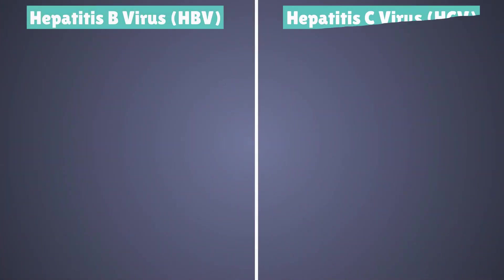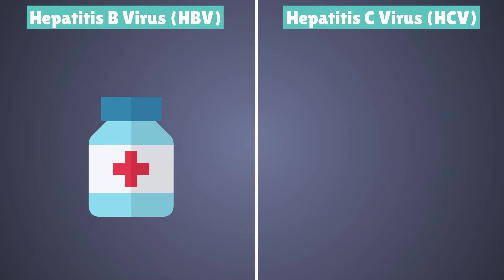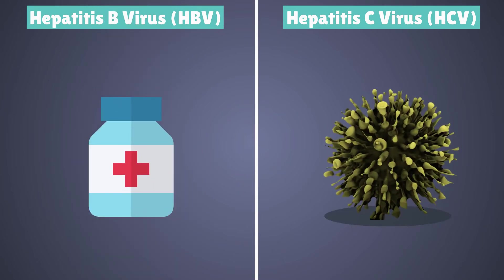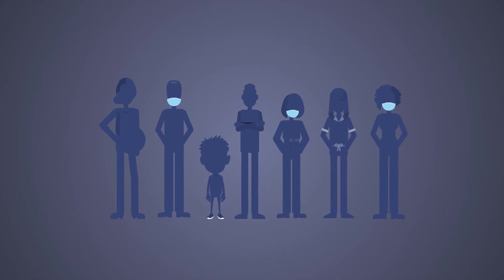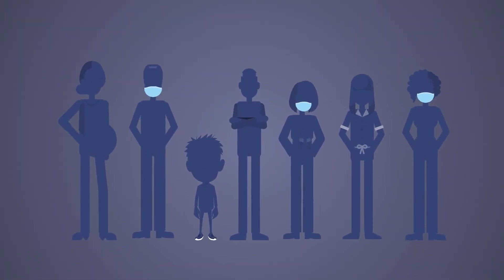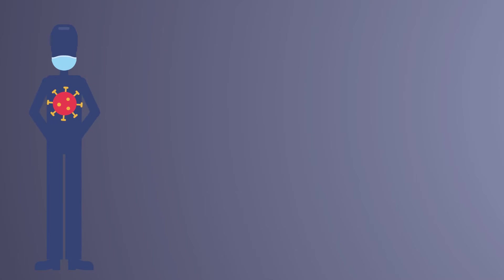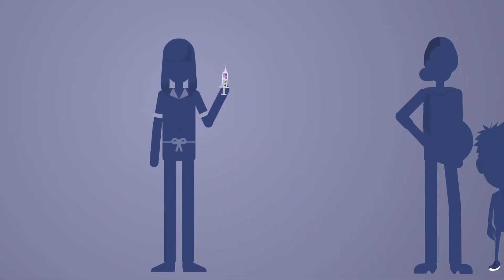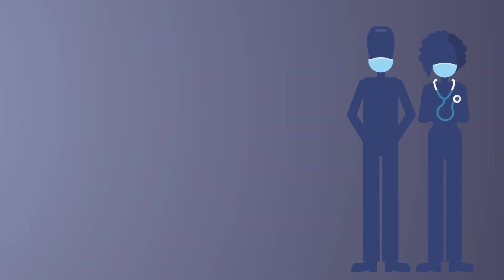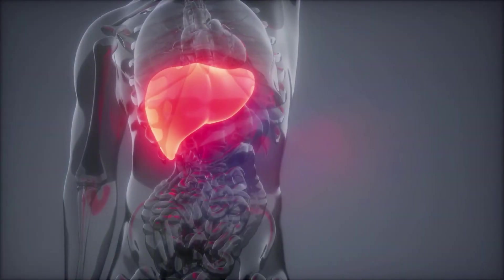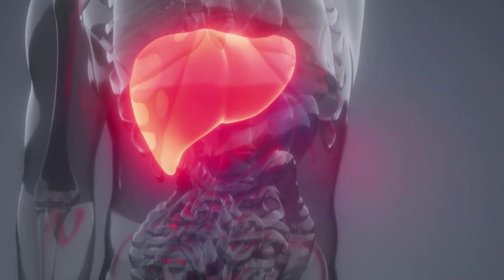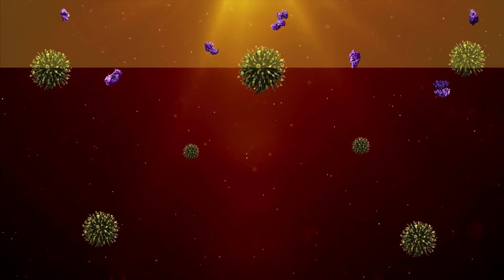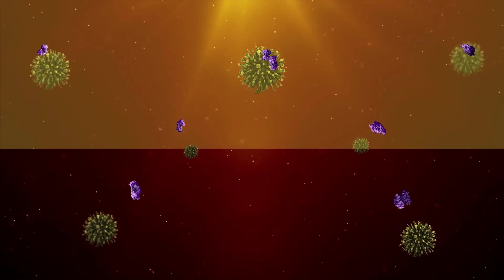While there is a vaccine to prevent HBV infection, there is currently no vaccine for HCV. The HBV vaccine is recommended for all children and adults who are at risk of exposure. This includes people infected with HIV, men who have sex with men, injection drug users, people with certain medical conditions and occupations such as healthcare workers. There are also safe and effective antiviral treatments that are available for the control of HBV and HCV. By reducing the viral load and its effects on the liver, they have been shown to reduce the risk of developing liver cancer.